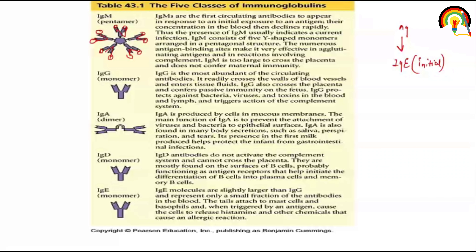IgG readily crosses the walls of blood vessels and enters tissue fluid. IgG also crosses the placenta, and when bacteria, viruses, or toxins attack the body, IgG prevents them — it works as part of the complement system. In this same way, all five immunoglobulins have been listed.